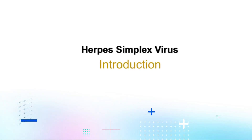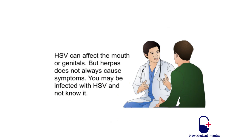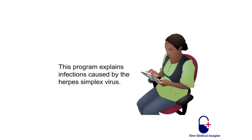The herpes simplex virus, or HSV, causes herpes. Herpes is a common infection. It can be spread by touching and kissing. It can also be spread during vaginal, anal, or oral sex. HSV can affect the mouth or genitals, but herpes does not always cause symptoms. You may be infected with HSV and not know it. This program explains infections caused by the herpes simplex virus.